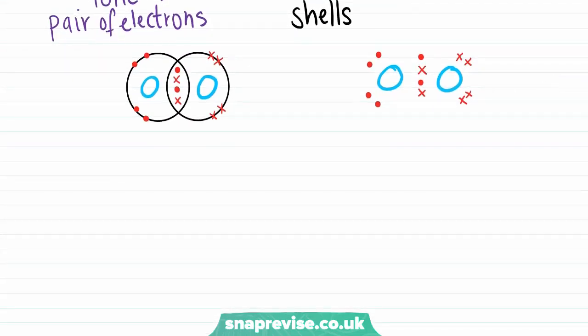We can look at another example of a dot and cross diagram here, which shows the molecule formed when two oxygen atoms form a covalent bond together. This is the O2 molecule.